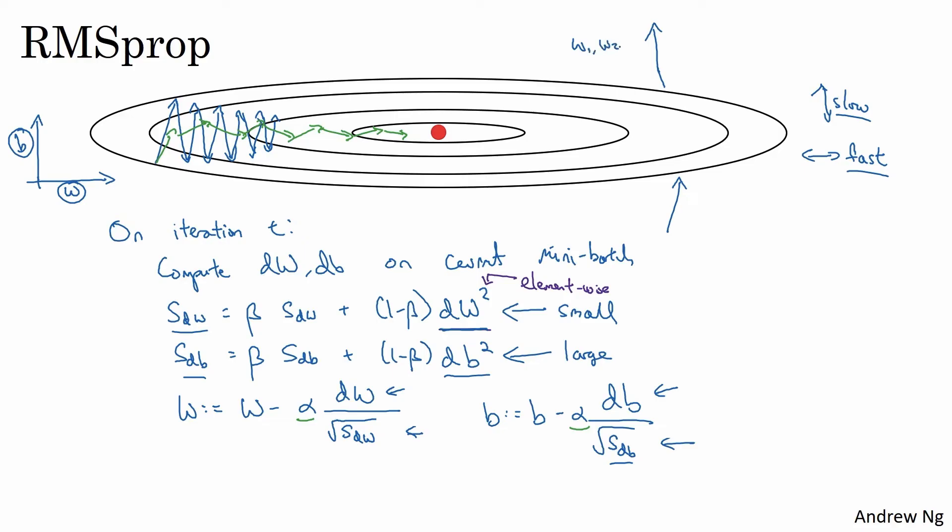w1, w2, w17, and the horizontal dimensions might be w3, w4, and so on. And so the separation as w and b is just for illustration.